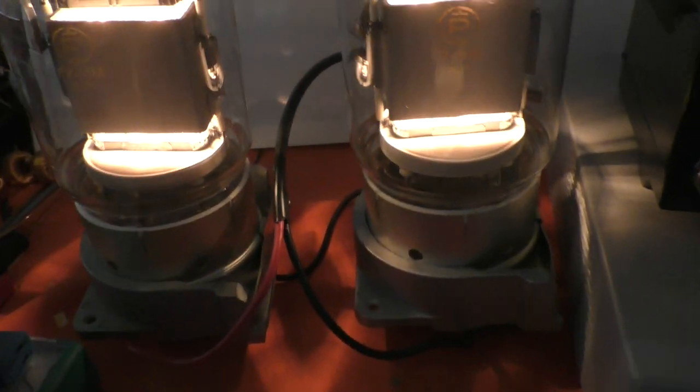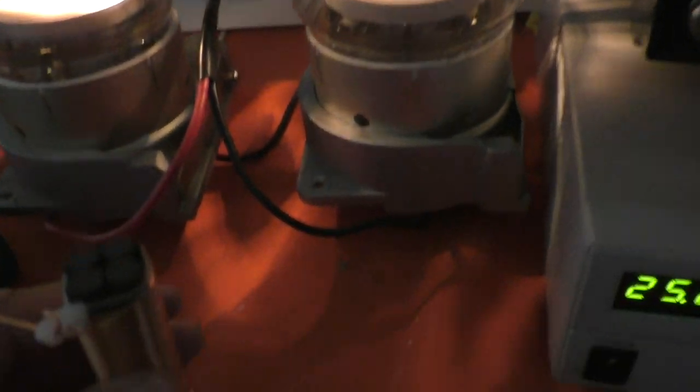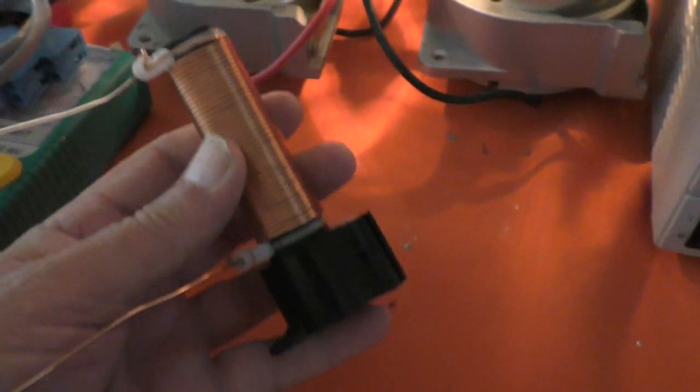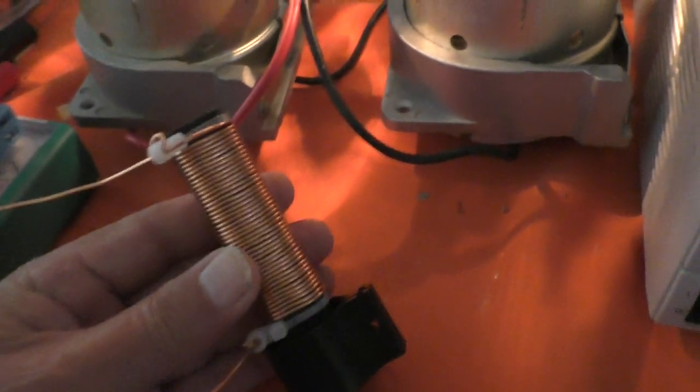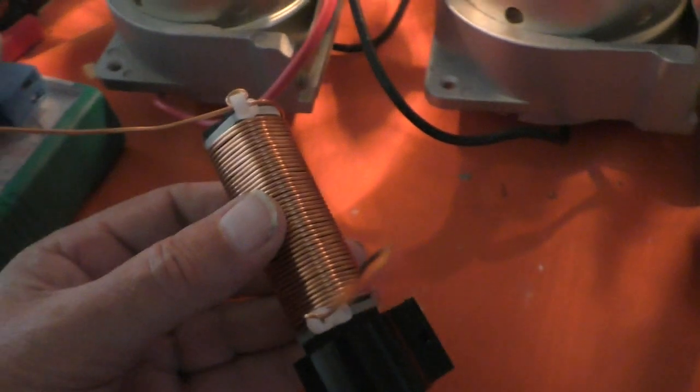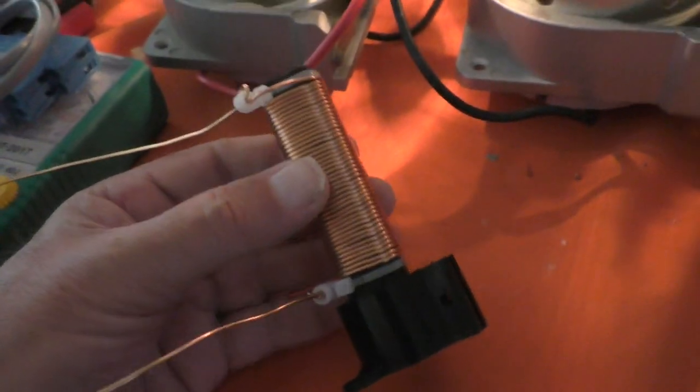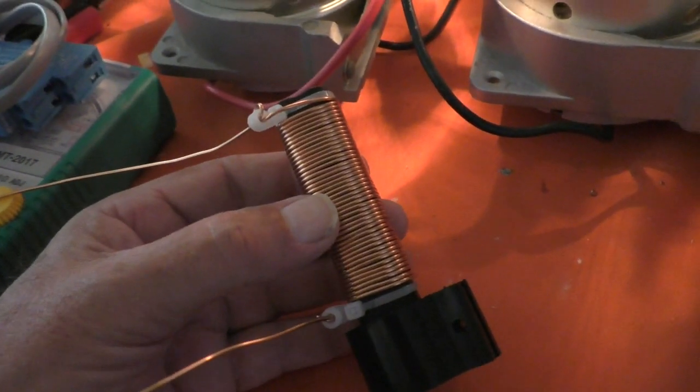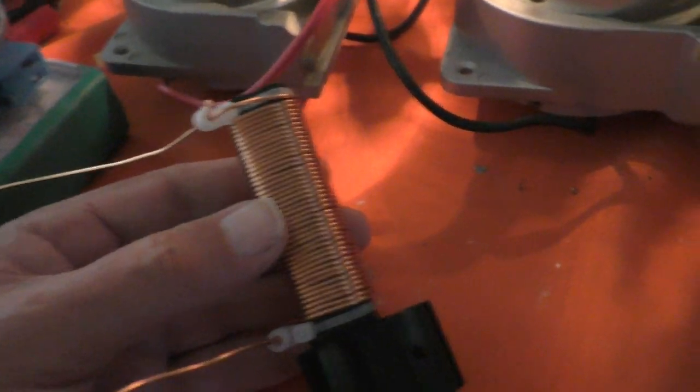And just while you're there, I thought, well I don't have the RF choke to go across the output yet. The one that, should the DC blocking capacitor between the anode and the tank circuit go short, it would just provide a short to ground and kill the HT supply so there's no HT gets out to the antenna.